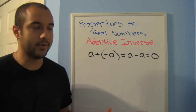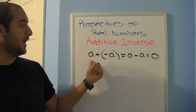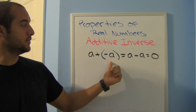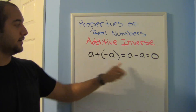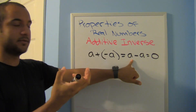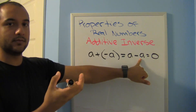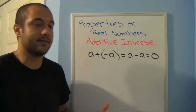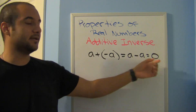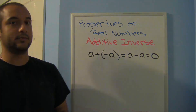The additive inverse is quick and easy: a plus negative a. You have a number, then you take it away — now you have nothing. So a minus a equals zero.